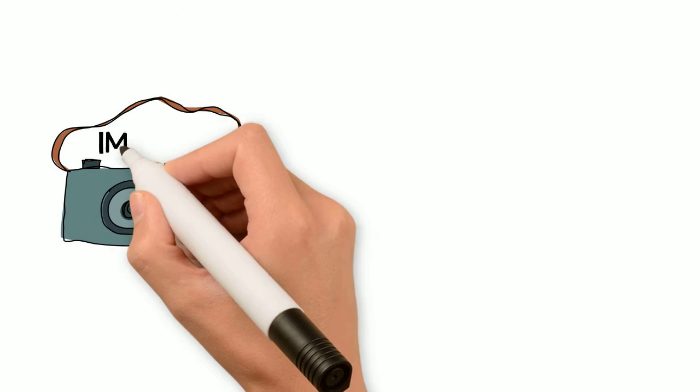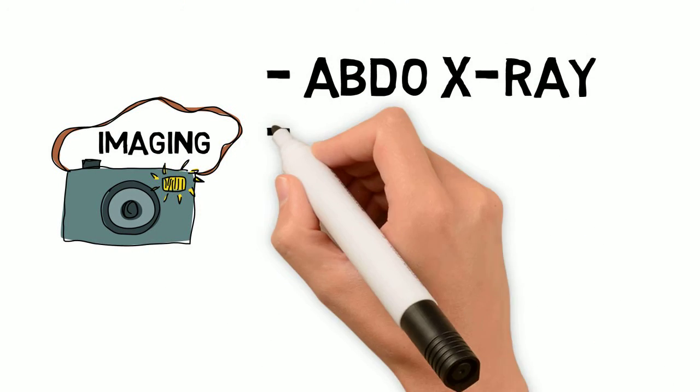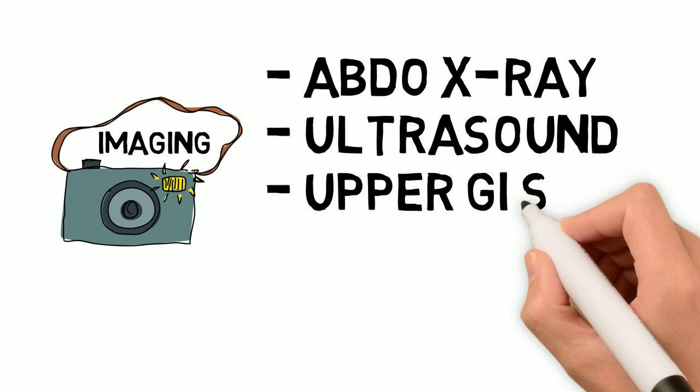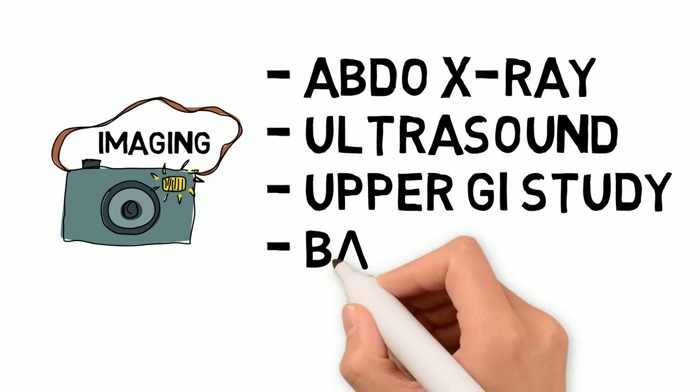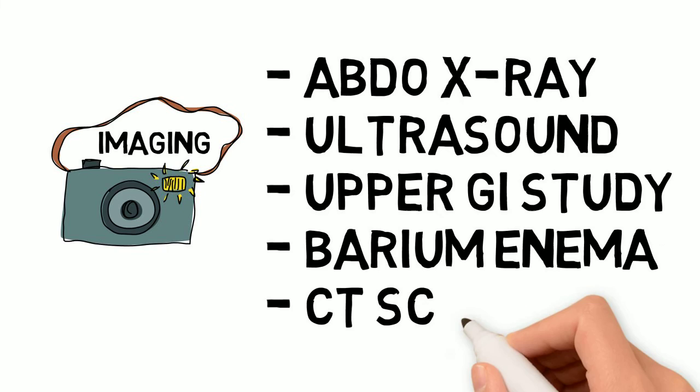Imaging will depend on the specific bowel obstruction that you are thinking of, but may include a plain abdominal x-ray, ultrasound, upper GI barium study, barium enema, or a CT scan.